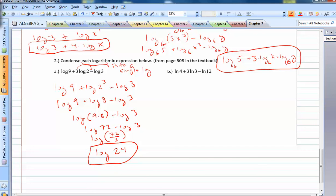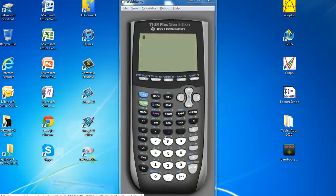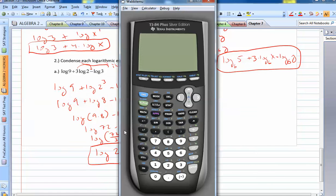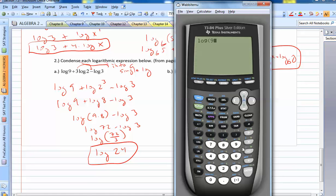And we can actually confirm this in the calculator. If I go to the calculator app that I have on my PC here. So log 9 plus 3 log 2 minus log 3. And if you do log 24, we get the same exact thing. So we know we did this right.